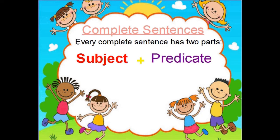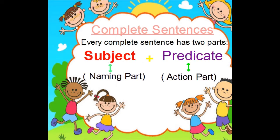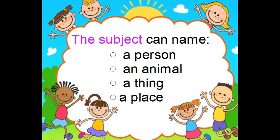Every complete sentence has two parts: the subject and the predicate. The subject is the naming part that tells who or what the sentence is about, and the predicate is the action part that tells what the subject did. Remember, the subject can name a person, an animal, a thing, or a place.